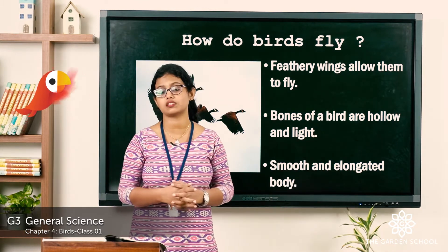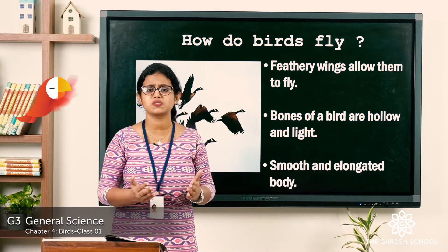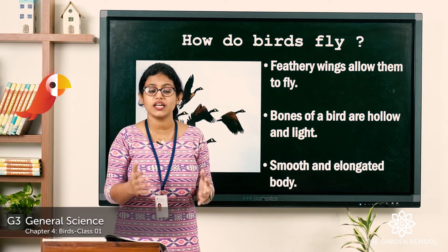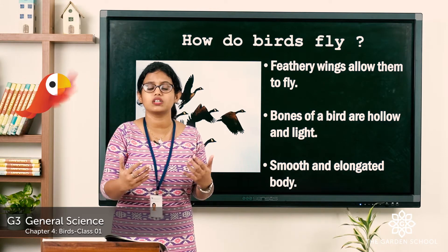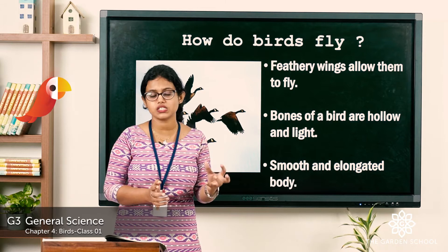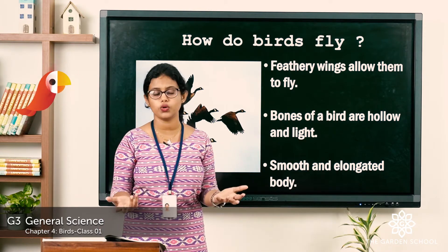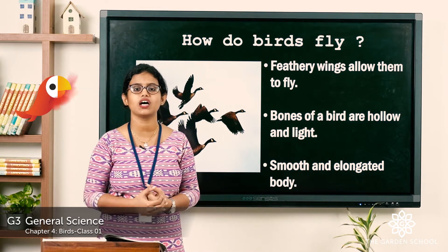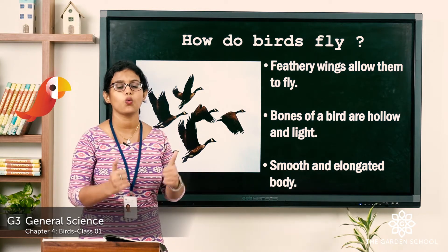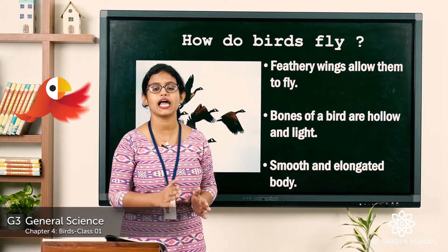Now let's learn something very interesting. Have you ever thought about how these birds fly? These birds have special features that help them to fly. You can see birds flying freely up in the sky without the help of their legs. Why can't we fly but these birds can? Because they have special features. The first feature is they have feathery wings — we have limbs but cannot fly, whereas these birds have feathery wings that allow them to fly in the sky. The flight feather is present on the wings and helps them to fly.